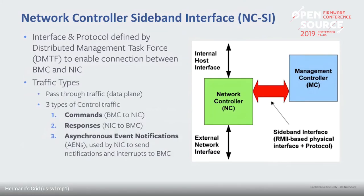A quick intro on NCSI: there is data plane traffic, which is just pass-through normal Ethernet traffic and not very interesting to the BMC. The control plane traffic has three types: commands, responses, and asynchronous event notifications (AENs). Commands are always initiated from the BMC — there's no way for the NIC to send commands to BMC. If the NIC wants to send notifications, it's done through AENs, which are asynchronous packets like interrupts. One important thing about AENs: there's no acknowledgement — it's fire-and-forget. When NIC sends an AEN, it doesn't know if BMC received it.